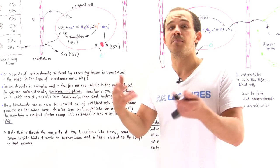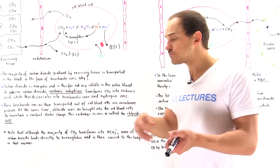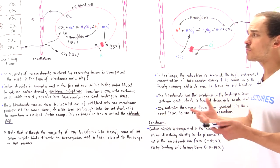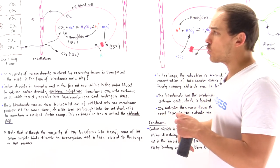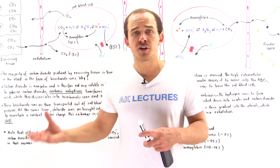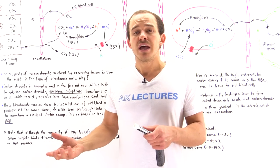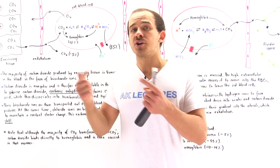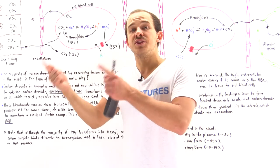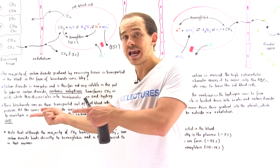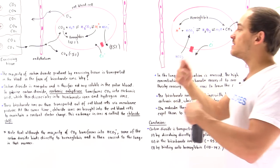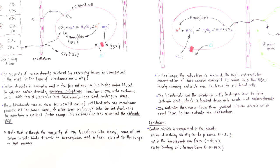Plants then use this CO2 through photosynthesis to produce sugar molecules. We either eat the plants or eat animals that ate the plants, and the cycle repeats itself.